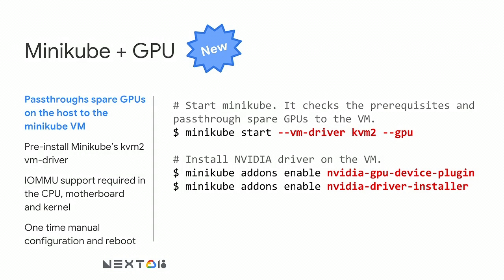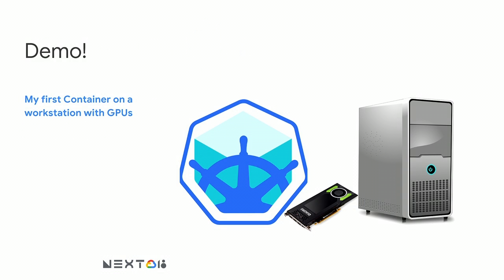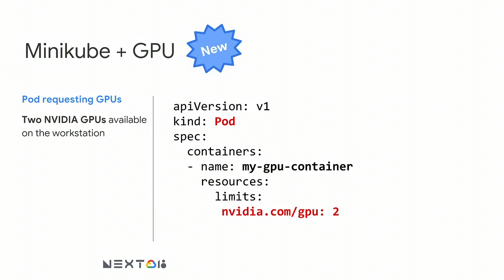Running a job is really simple. In this example, all you have to do is specify the type of resource you want to use and the amount of GPU you need. In this particular example, we're requesting two NVIDIA GPUs from that workstation. That's all you need to access GPUs through Minikube on your workstation.